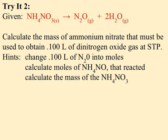Here's one for you to try using the same equation. The question asks for the mass of ammonium nitrate needed to obtain 0.10 liters of dinitrogen oxide at STP. I'm working the opposite direction: start with liters of N2O, convert to moles, use the molar ratio to get moles of NH4NO3, then convert moles back to grams. You know how much product you need to make, so you figure out how much reactant to start with.